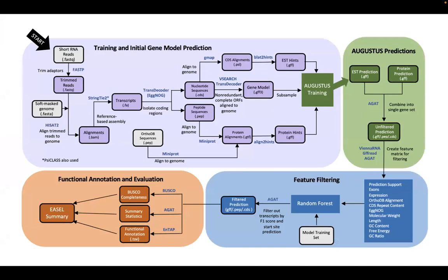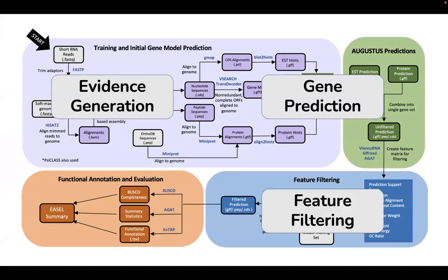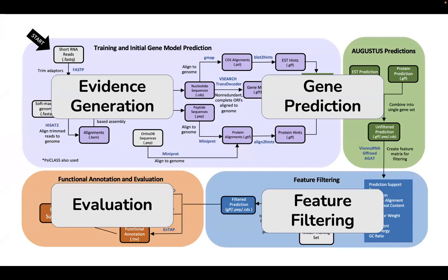The EASL pipeline is quite complex, but can be split into four categories: evidence generation, gene prediction, feature filtering, and evaluation.